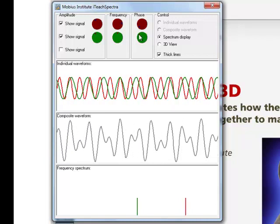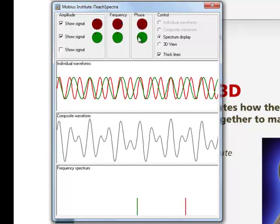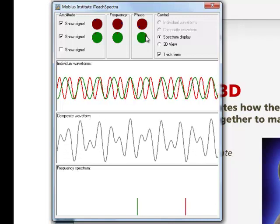Those two individual signals are going to appear in the spectrum in the same way because the spectrum doesn't represent phase, it only represents frequency and amplitude. And why is this simulator called 3D? Well let's go into 3D mode.